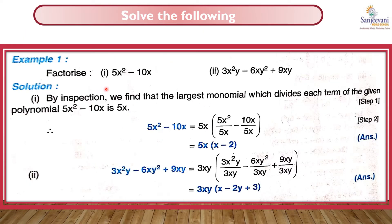For example, I have 5x² - 10x. By inspection, the common factor is 5x. So I will bring 5x outside and inside I will write (5x² ÷ 5x) - (10x ÷ 5x). When I divide 5x² by 5x, 5x cancels and what remains is x. Then 10x divided by 5x: 5x cancels and what remains is 2.